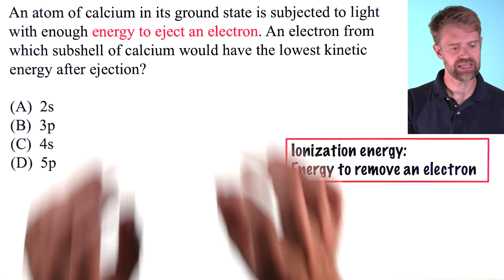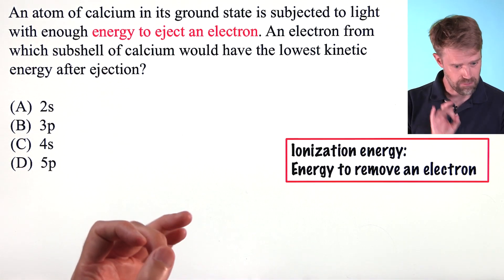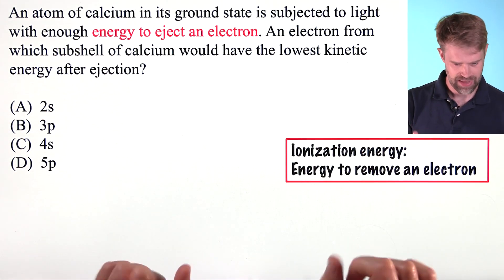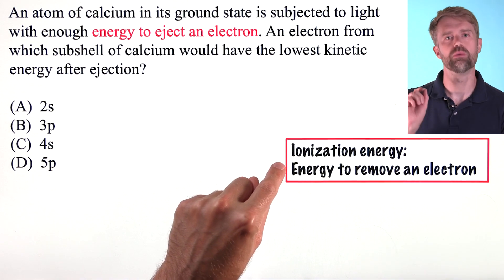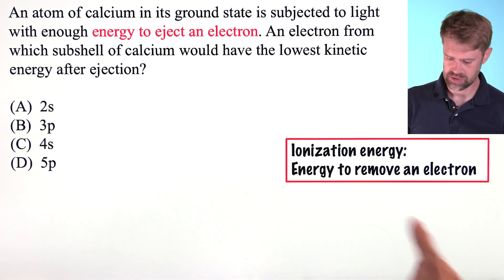An electron is being ejected from a calcium atom. The energy required to remove an electron from an atom is known as the ionization energy.